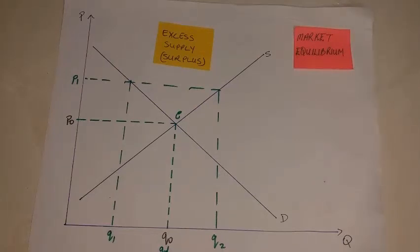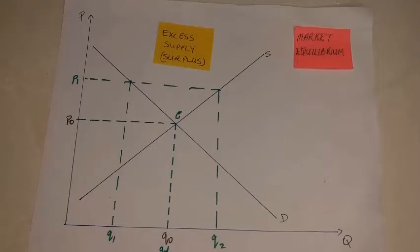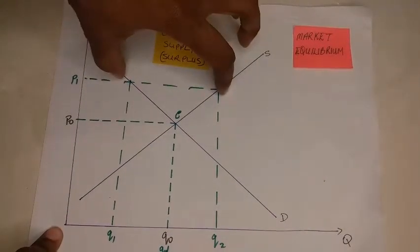So what happens in a situation where we have a surplus in the market? Let's look at the situation with tomatoes. If we have an excess supply or surplus of tomatoes, it means quantity supplied is greater than quantity demanded. So for the tomatoes not to rot on the vendor's hands, they will have to lower price in order to get rid of this excess supply of tomatoes.